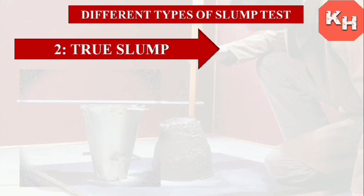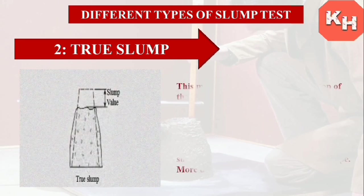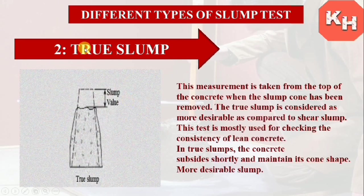True slump: This measurement is taken from the top of the concrete when the slump cone has been removed. The true slump is considered more desirable compared to shear slump. This type is mostly used for checking consistency of lean concrete. In true slump, the concrete subsides slightly but maintains its cone shape — it is the most desirable slump type.